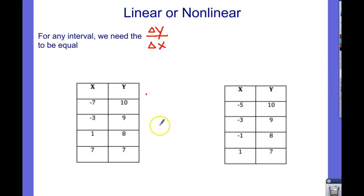So, let's check that out here. I can just go through and do all my intervals here. From negative 7 to negative 3, that is plus 4. From 10 to 9, that would be negative 1. So, my change in y over change in x, that's my slope or rate of change, that would be negative 1 over 4. We need each one of these intervals to be at that ratio. Let's keep doing it.